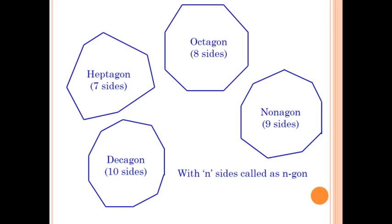A polygon having seven sides is known as a heptagon, and octagon is a polygon having eight sides. Nonagon is a polygon having nine sides, and decagon is a polygon having ten sides. With n sides, a polygon is called an n-gon.